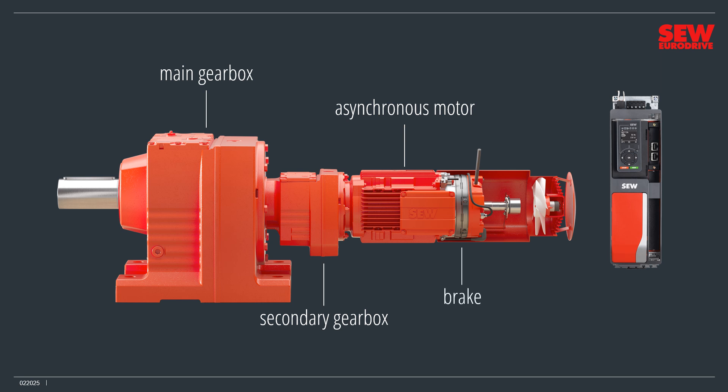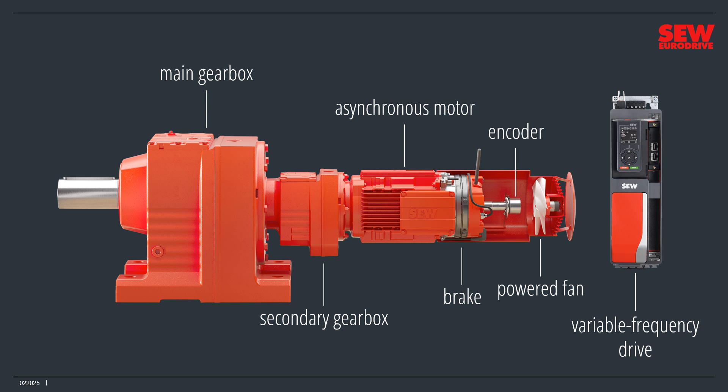This drive's motor includes a brake that can stop the application or hold it in place. Not all motors come with brakes, although many do. The motor also includes an accessory called an encoder that monitors and reports its speed. Finally, it has a powered fan to keep it cool. This drive comes with a very important component called a variable frequency drive – you'll learn a lot about them in this module. Just think of it as an electronic motor controller. Many of these accessories are optional and aren't present on every drive you'll encounter.